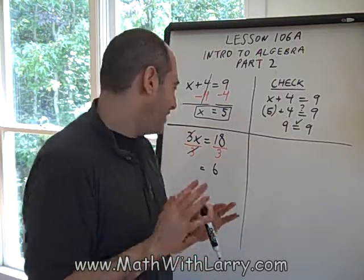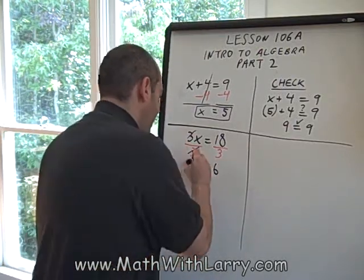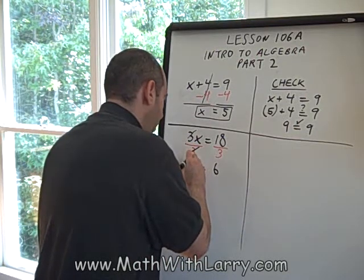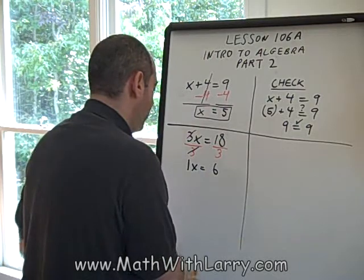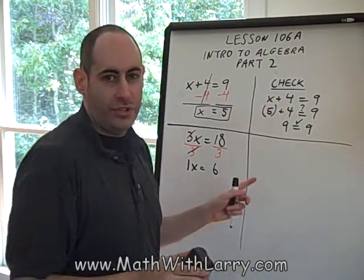So it's not that the 3s really disappear. It's that we're dealing with 1. 3 divided by 3 is 1. So what we really have on the left is 1x equals 6.